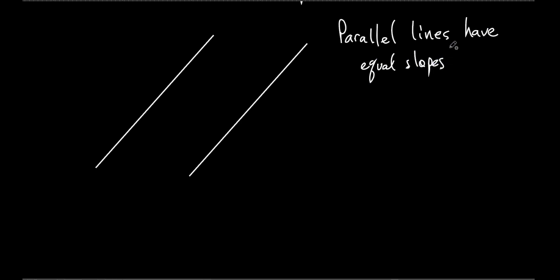We did do this — I remember now. So if these lines are parallel, and you know they're parallel because of the little arrows, then they have equal slopes. This is review, and that's why I went right to the example. Anyway, let's talk about perpendicular lines.